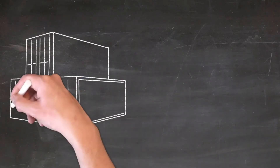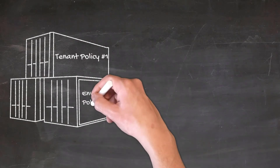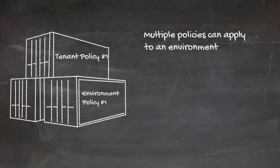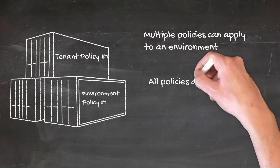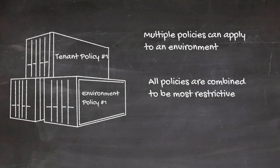DLP policies can be created both at the tenant level and at the individual environment level, meaning that multiple policies can apply to an environment. If there are multiple policies — for example, one at the tenant level as a global policy and one at the environment level for your specific environment — those are combined and give you the most restrictive access allowed. If a connector was placed in the business category or blocked, it could not be unblocked or made non-business by another policy.